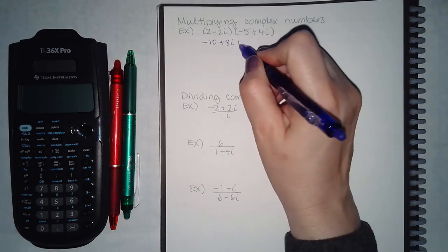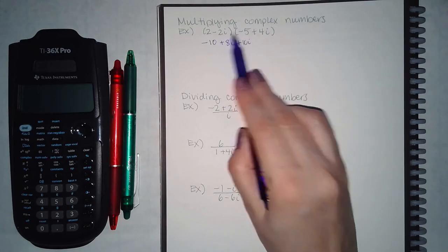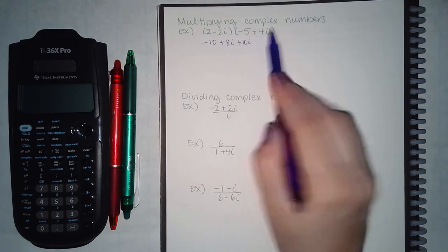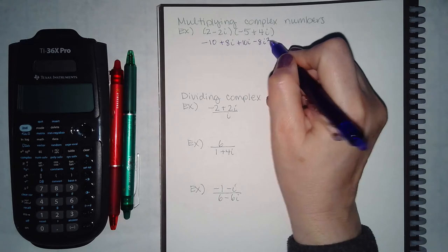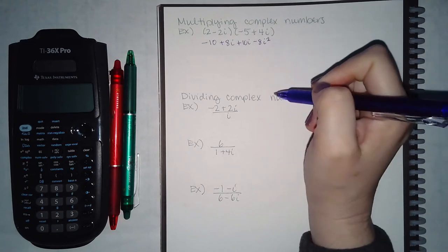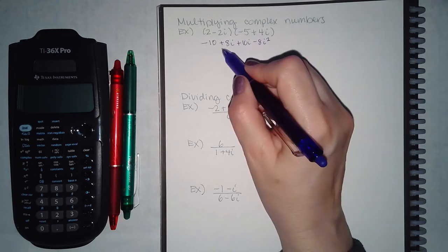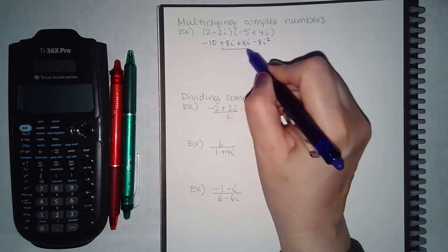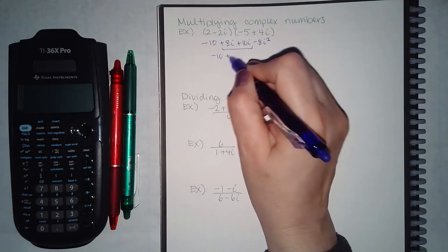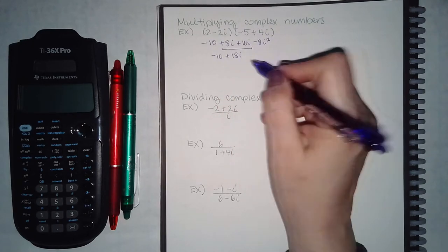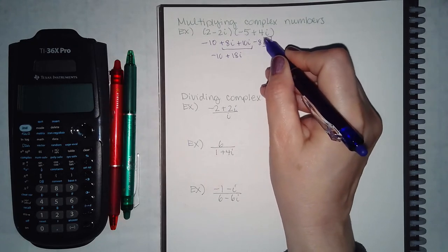Next, negative 2i times negative 5 gives positive 10i, and negative 2i times positive 4i gives negative 8i squared. Now I can combine the like terms: the imaginary parts 8i and 10i combine to give 18i, so I have negative 10 plus 18i, but I cannot leave i squared like that.